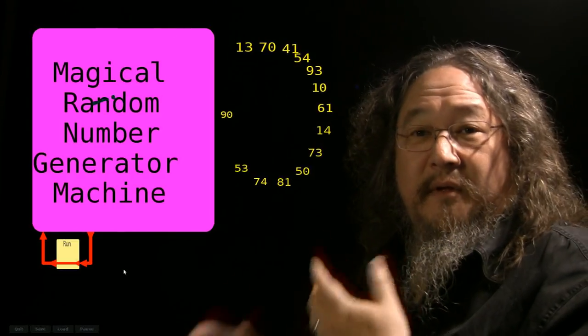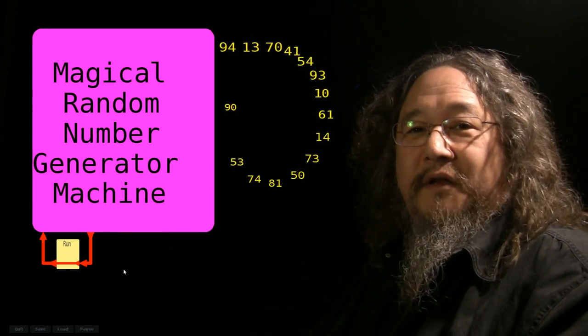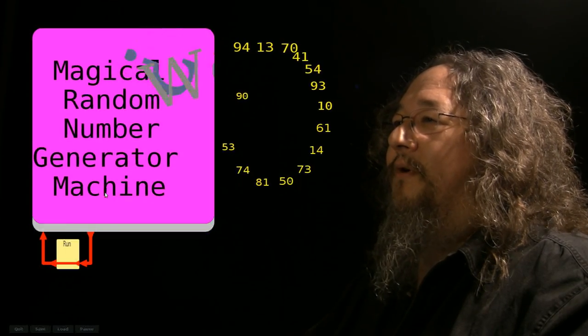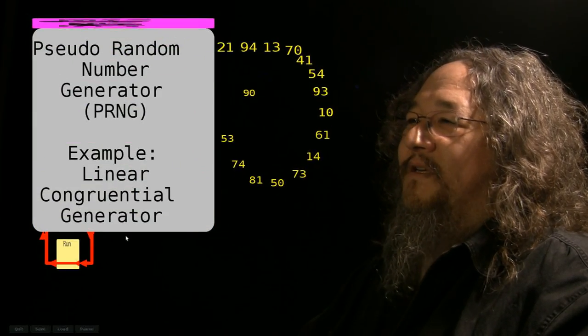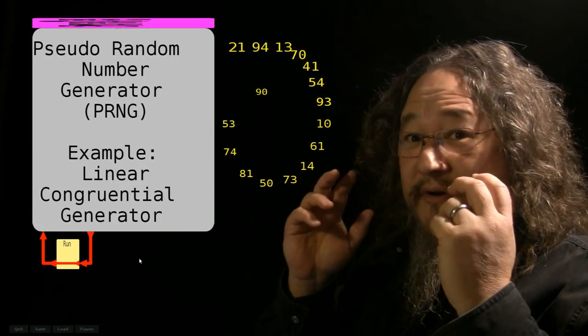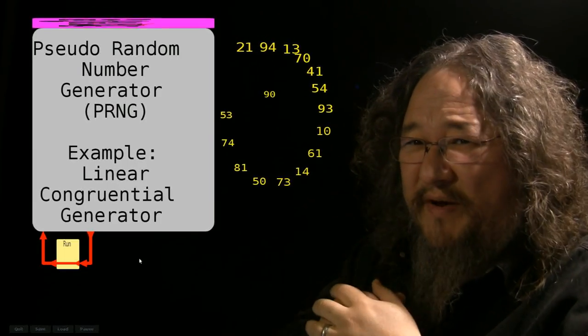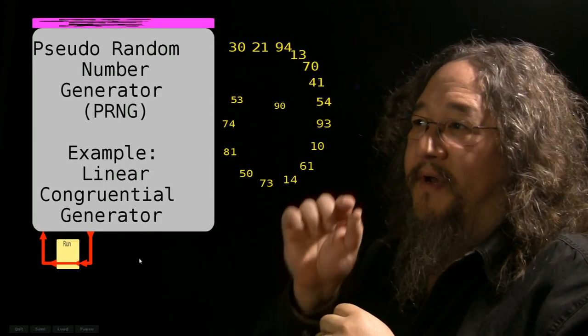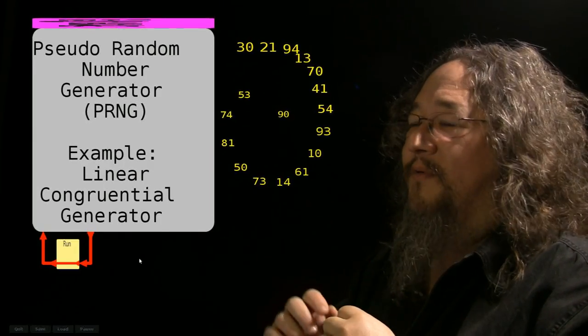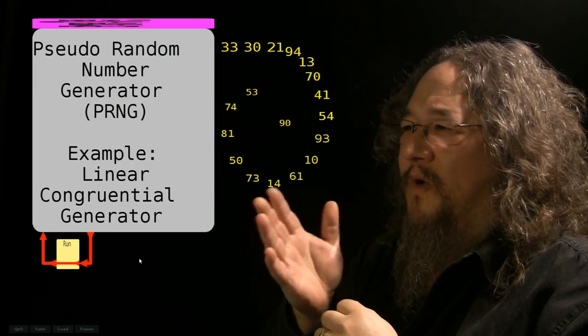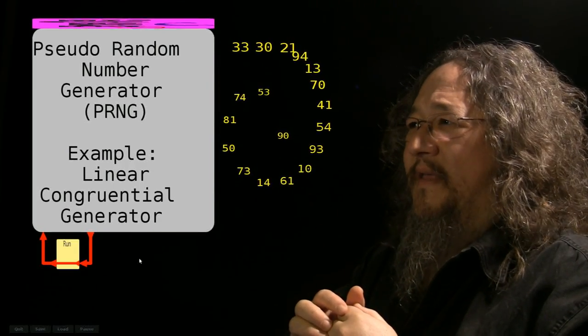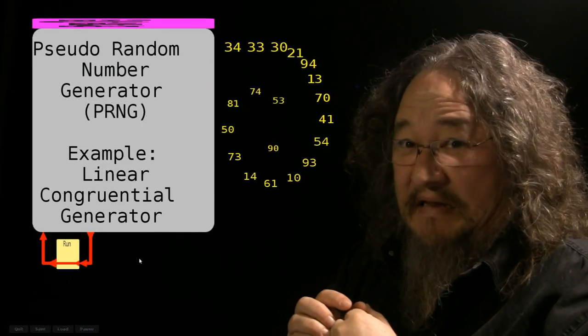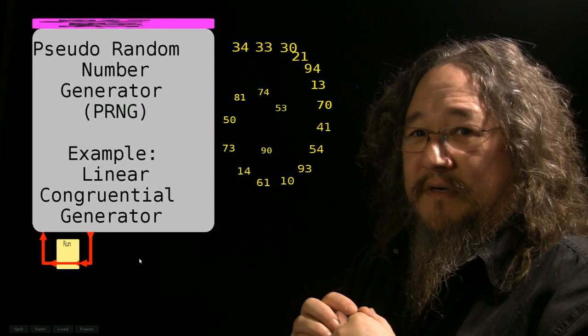Well, this isn't random. Big surprise. It's running in a computer. Let's pop the hood. What we actually have under here is not a random number generator, in a real randomness sense, whatever that means. What we have is a pseudo-random number generator, PRNG. And this particular one is called a linear congruential generator.